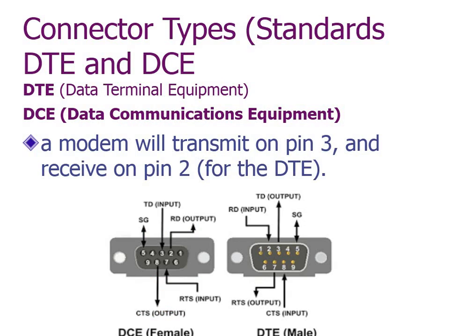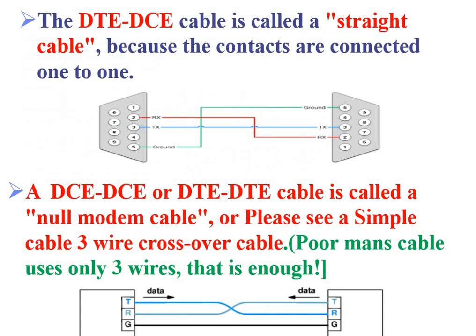In RS-232, there are two types of connectors: DTE (Data Terminal Equipment) and DCE (Data Communication Equipment). For example, a modem which is a DTE transmits on pin 3 and receives on pin 2. DTE connectors are always male; DCE connectors are female. When DTE-DCE communication takes place, it uses a straight cable — receive goes to receive, transmit goes to transmit.